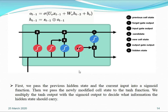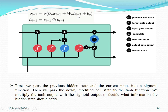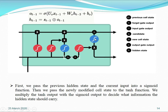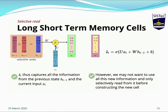For the output gate operation, we pass the previous hidden state and the current input through a sigmoid activation function. Then we pass the newly modified cell state through the tanh activation function. We then multiply the tanh output and the sigmoid output to determine the information passed forward. In the diagram, the hidden state and input both go into the sigmoid, and the previous cell state passes through tanh, and both outputs are multiplied together.